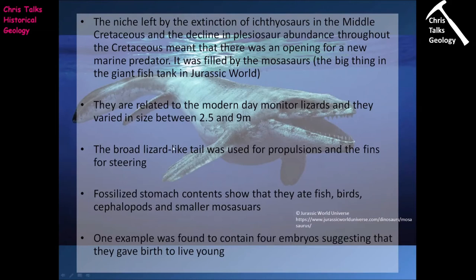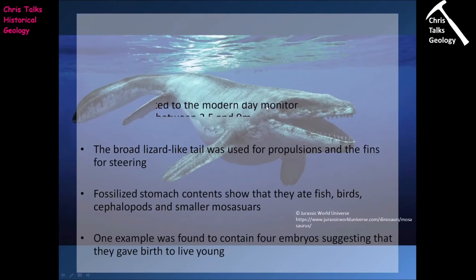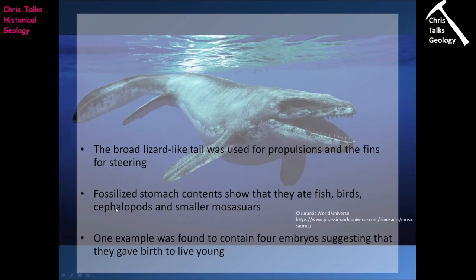Mosasaurs are related to modern-day monitor lizards, and they varied in size from about 2.5 metres to 9 metres in length. You can see the relationship to monitor lizards, but the forelimbs and hindlimbs are adapting to produce fins, and the tail is becoming broader and flatter so it can be used for propulsion in the water. The fossilised stomach contents of mosasaurs showed they ate fish, birds, cephalopods, and smaller mosasaurs — they were cannibals.